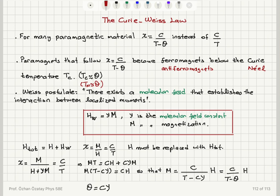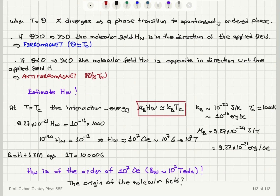The absolute value of theta is the Néel temperature, since the Néel temperature is not negative. To estimate the Weiss molecular field, at the critical phase transition temperature the interaction energy between the Weiss molecular field and the magnetic moments, mu_B times Hw, is of the order of thermal energy K_B times Tc. Doing this calculation in CGS units, we find the Weiss molecular field is of the order of 10 to 7 Oersteds, corresponding to about 10 to 3 Tesla of B field. The origin of this huge field is unclear at this point and we will return to it when we start talking about ferromagnetism.